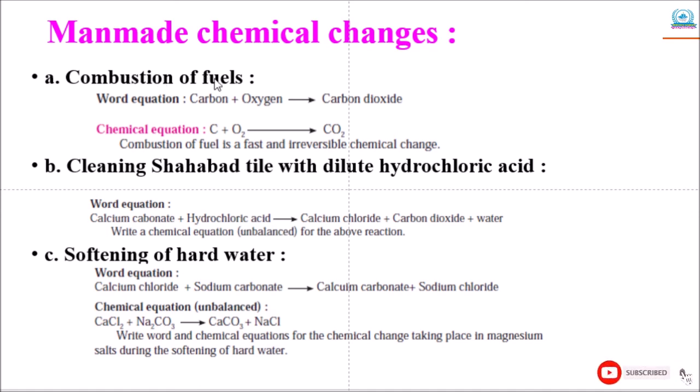Next is cleaning Shahabad tile with dilute hydrochloric acid. The chemical composition of Shahabad tile is mainly calcium carbonate. During its cleaning with hydrochloric acid, the upper layer of the tile reacts with hydrochloric acid and three products are formed. One is calcium chloride which is soluble in water and gets washed away. The second product is carbon dioxide, its bubbles mix in air. The third product water mixes with water. The word equation is: calcium carbonate plus hydrochloric acid gives calcium chloride, carbon dioxide, plus water.